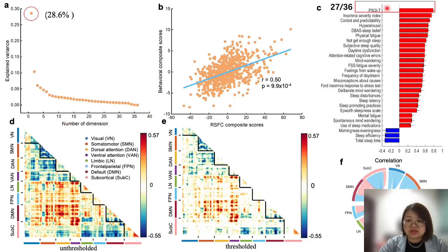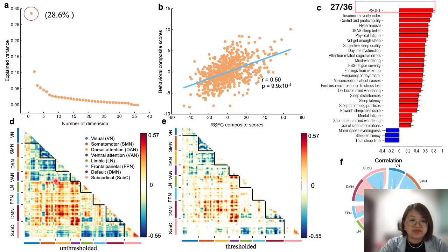The most contributing measure in the latent variable found in the discovery sample was the total score of the PSQI. Figure D denotes the unthresholded correlation between participants' resting-state functional connectivity data and their FC composite scores. Figure E shows the thresholded correlations, and Figure F plots the correlations averaged within and between networks defined by the Yeo 7-network parcellation.